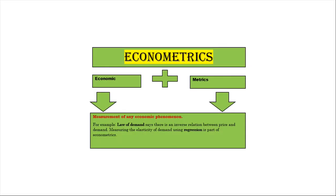I think friends we are very much clear. So this is the way we can put it in pictorial manner: what is econometrics? It is combination of economics and metrics. Law of demand is the example. This is a simple way.